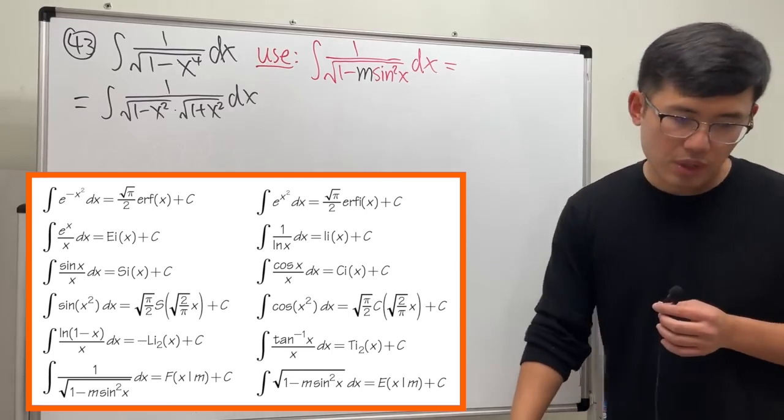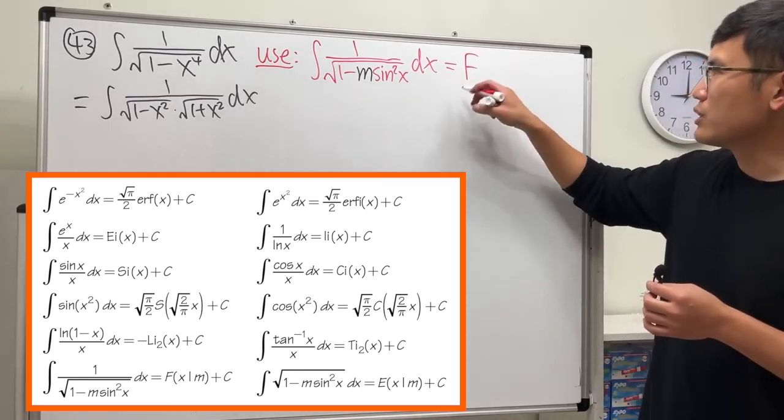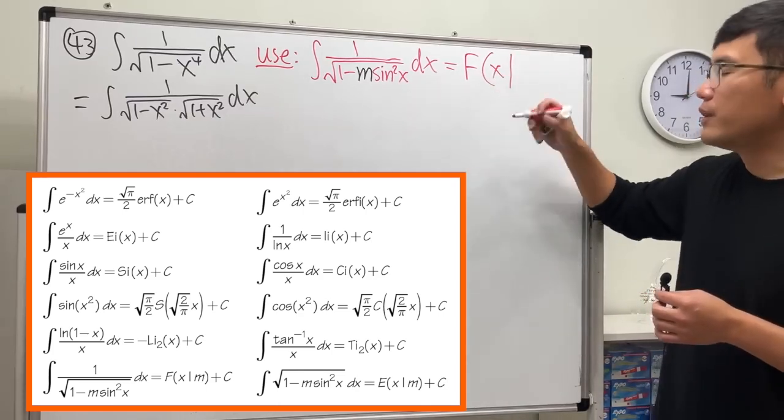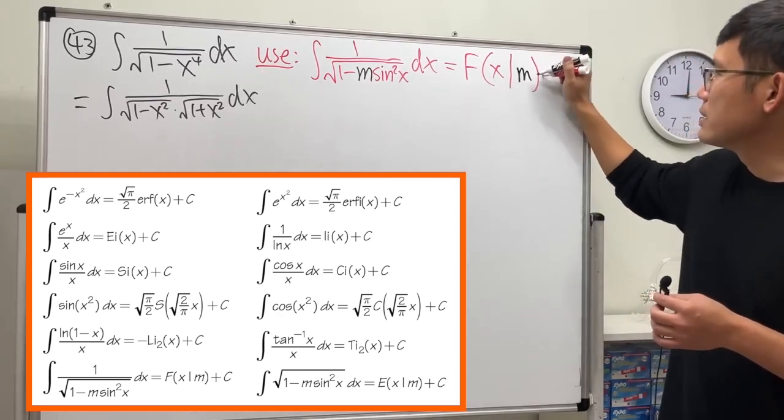This right here, I will tell you, it's the elliptic integral of first kind. So just put F, and then it's the input x here, and then vertical bar such that I give the parameter m here, so it's like this.